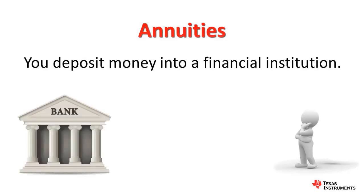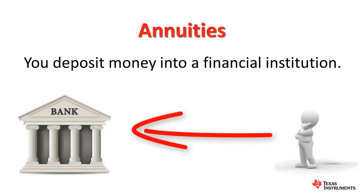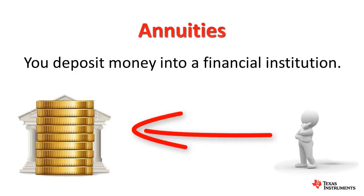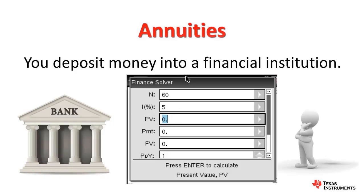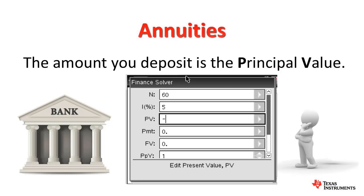Use the tab key to navigate down to the principal value. Here's where we need to understand the term annuity. With an annuity, you deposit money into the financial institution — the direction of cash flow is from you to the institution. Because the money is leaving, I'm going to mark this as a negative. The amount that Amy deposits is the principal value. This amount is based on the starting time of the fifth year, so it's $150,000.